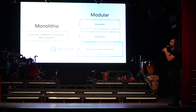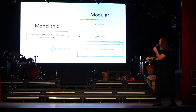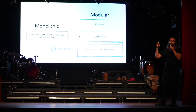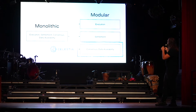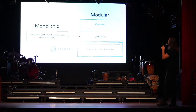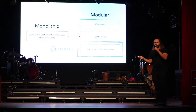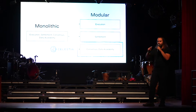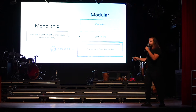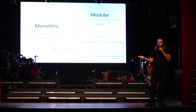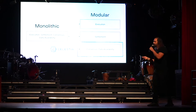Celestia covers consensus and data availability. With Celestia, we don't have a settlement layer, but you can deploy a settlement layer that connects with Celestia. And we don't have an execution environment, but you can deploy execution environments on top. The talk is going to cover those properties of modular blockchains, and at the same time we'll assess the security properties on the layer one side.